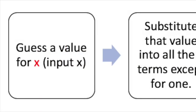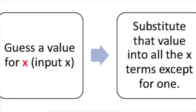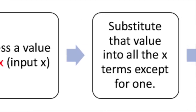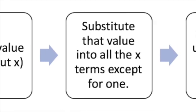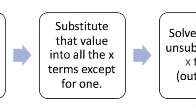A second method to solving polynomials is called successive approximation. This is a trial and error method, where first, we guess for the value of x, called input x. We then substitute this input value into all terms containing x, except for one.